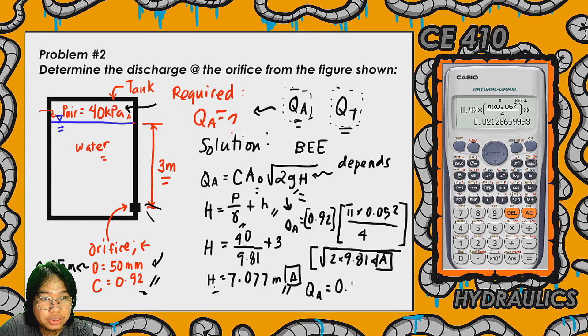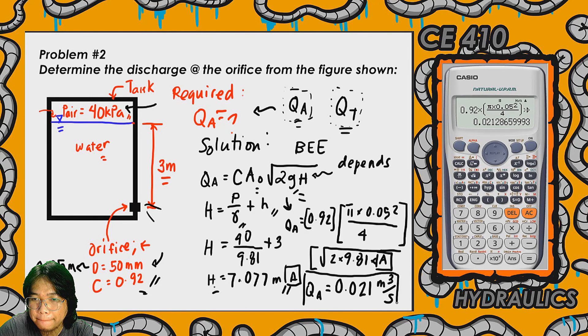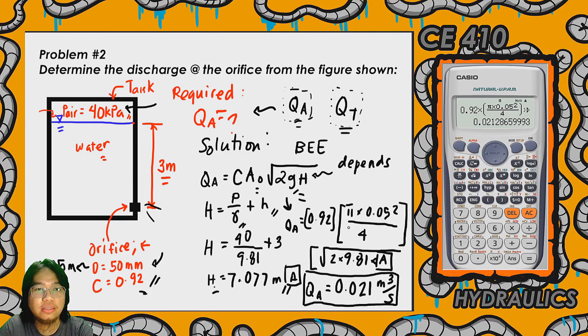So the computed actual discharge is 0.021 cubic meters per second. So this would be our final answer. If you want to make this a more significant value, you can multiply this to 1,000 and the unit will become LPS.